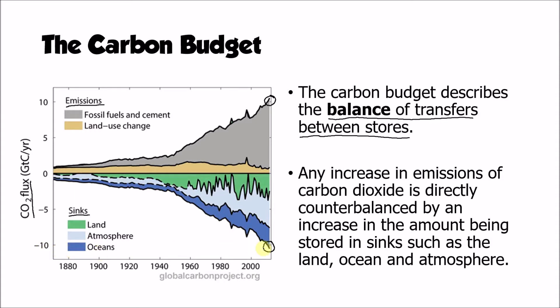That is because the carbon that we release through human activity ends up in one of these three sinks — it either gets absorbed by plants and becomes part of the land sink, it gets absorbed by the oceans and becomes part of that sink, or it stays in the atmosphere. About 50% of all the emissions we have released as a result of human activity have ended up being absorbed either by the land or by the oceans, and about 50% remains in the atmosphere.